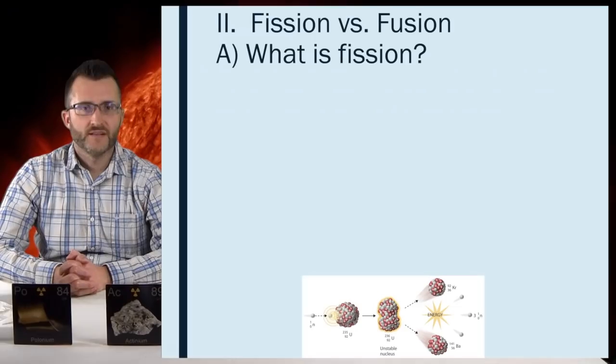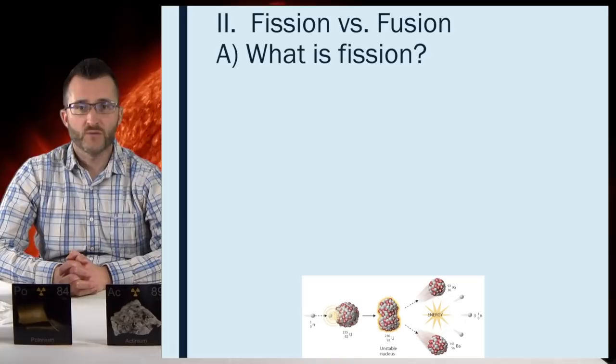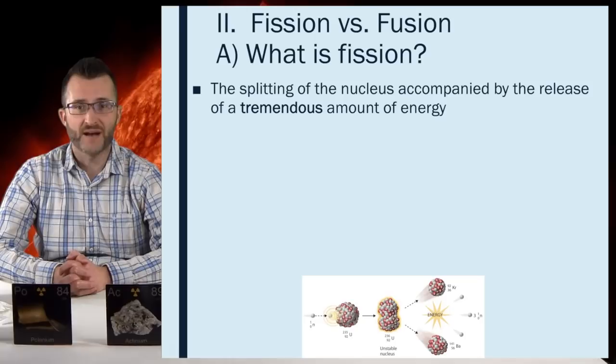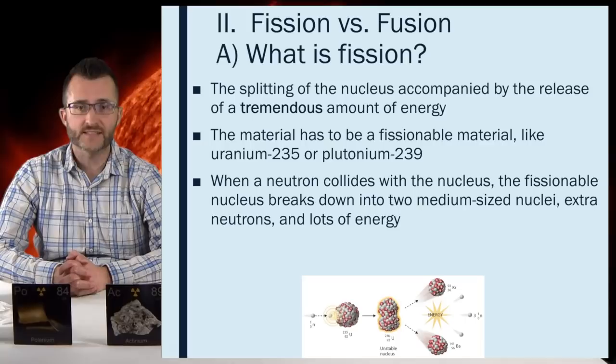Fission versus fusion. What is fission? The splitting of the nucleus accompanied by the release of a tremendous amount of energy. The material has to be a fissionable material, like uranium-235 or plutonium-239. When a neutron collides with a nucleus, the fissionable nucleus breaks down into two medium-sized nuclei, extra neutrons, and lots of energy. This is the reaction utilized in both nuclear power plants and nuclear weaponry.